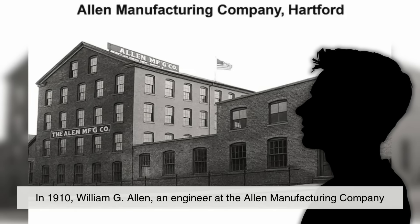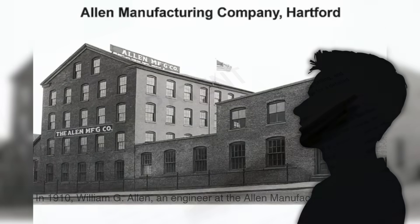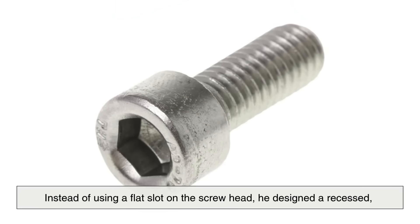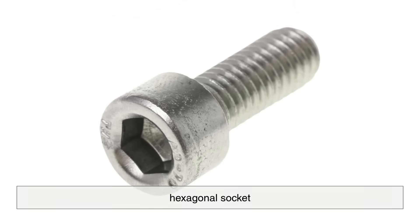In 1910, William G. Allen, an engineer at the Allen Manufacturing Company, filed a patent for a new kind of screw head and the tool to fit it. Instead of using a flat slot on the screw head, he designed a recessed hexagonal socket.